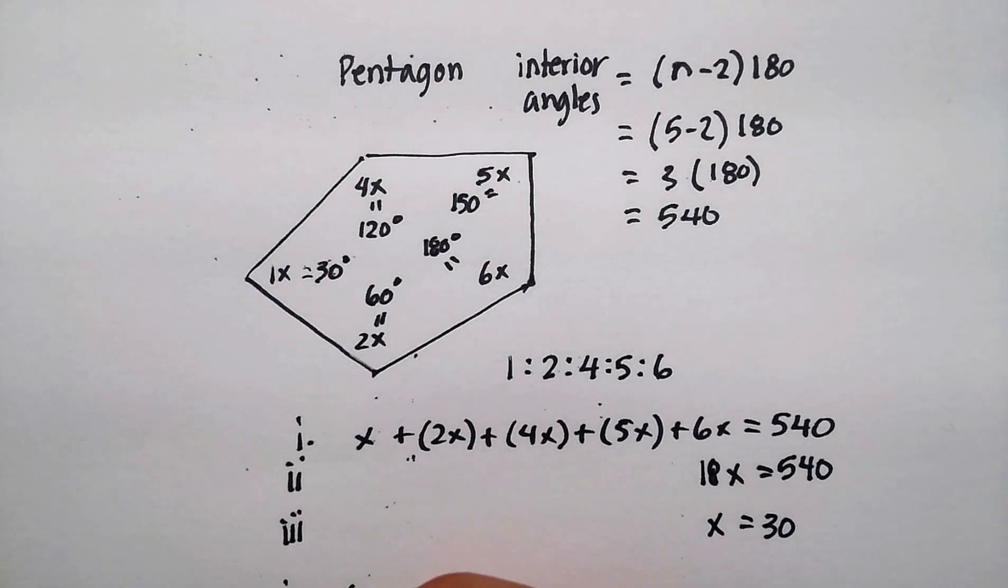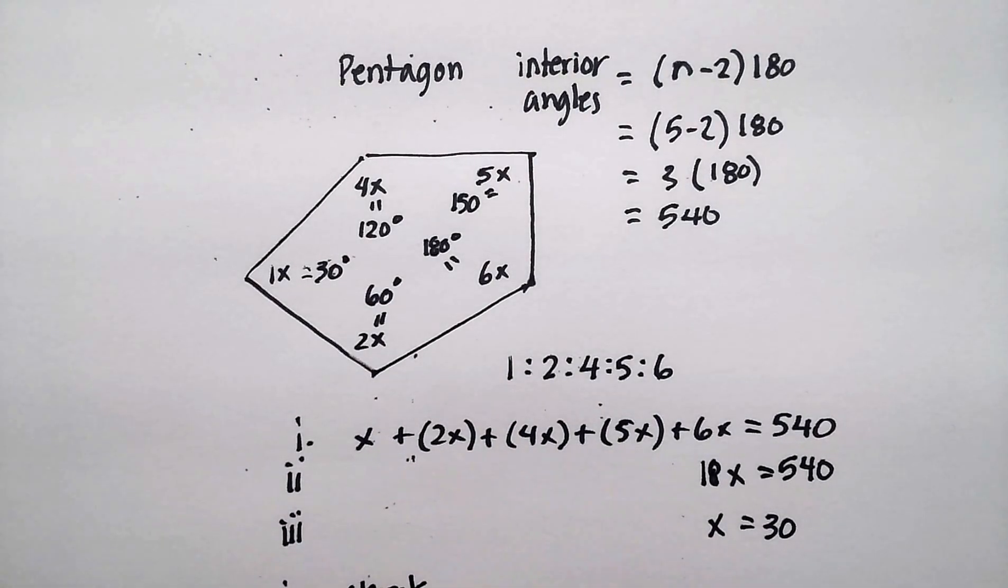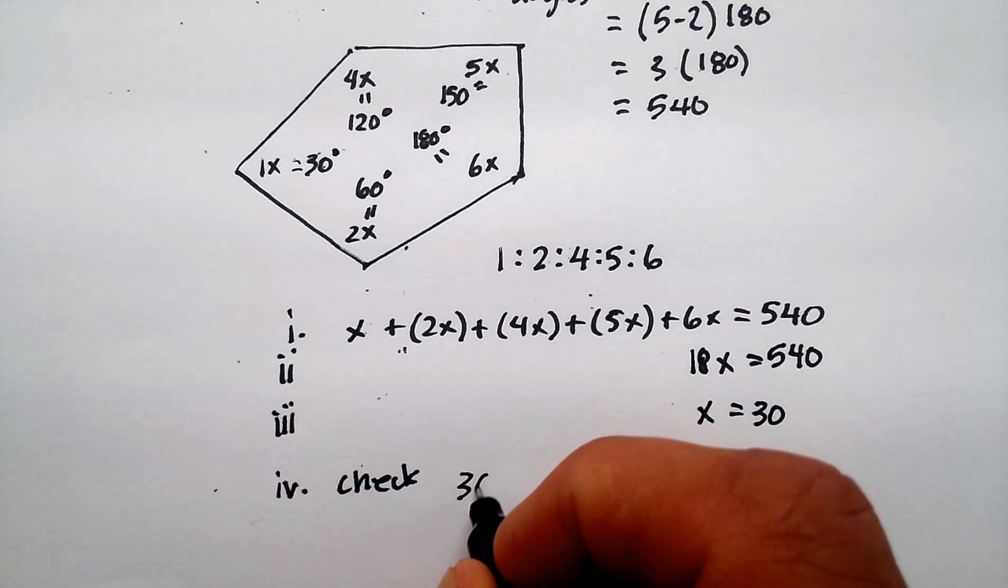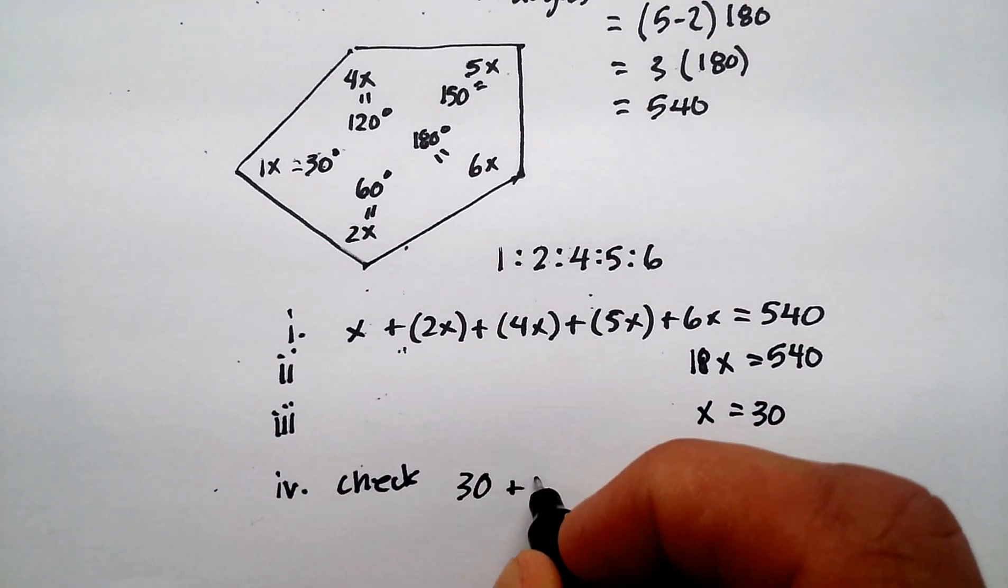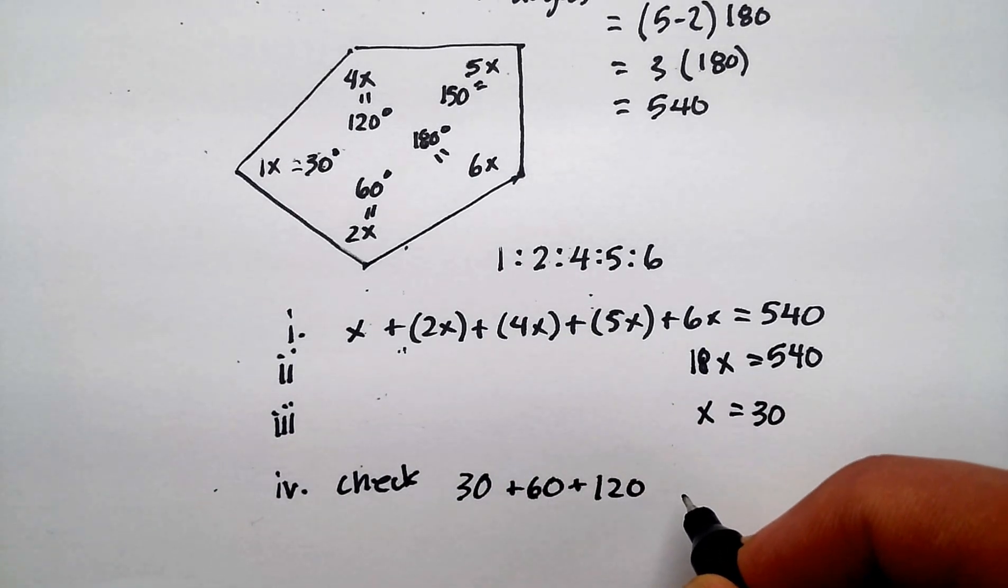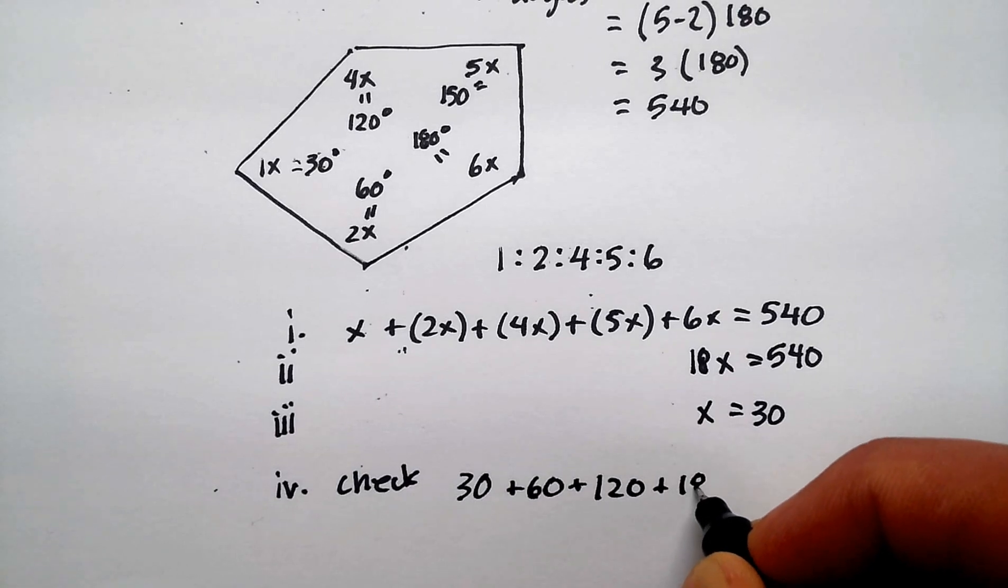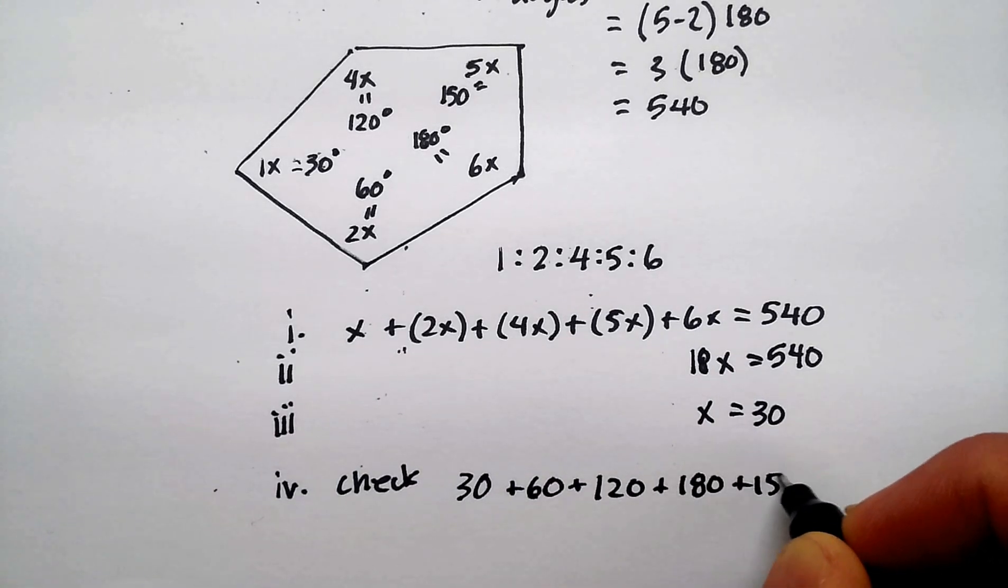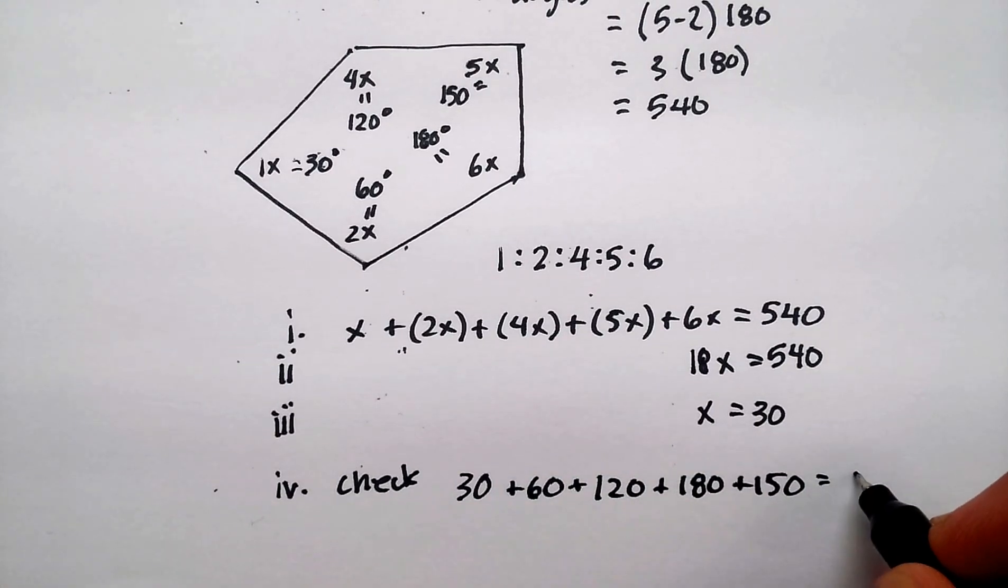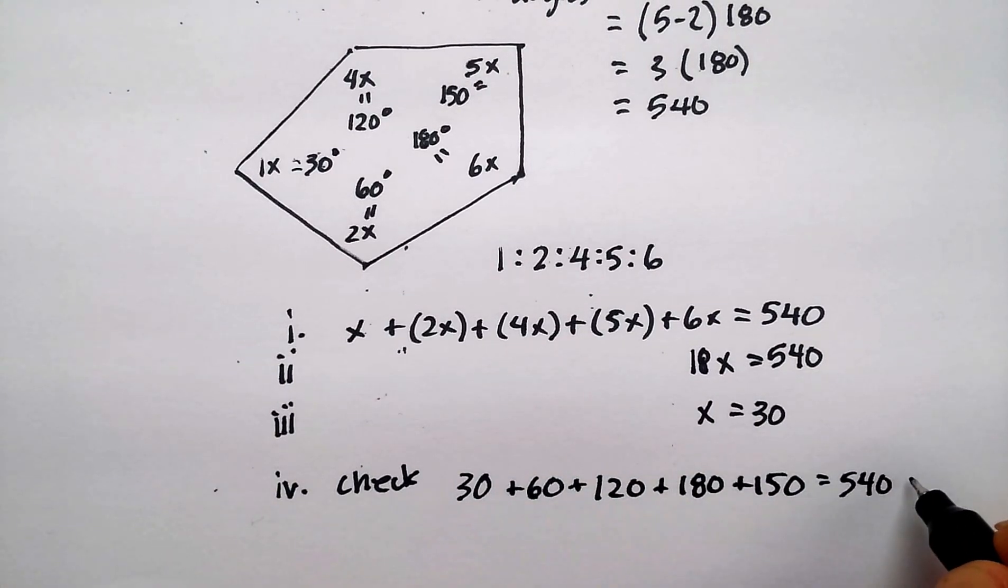Step 4, we'll call this one check. And I'm going to add 30 plus 60 plus 120 plus 180 plus 150. And you do that on your calculator. And you get, sure enough, 540. And your answer checks out.